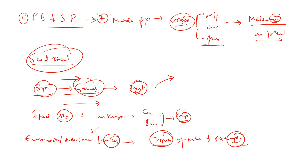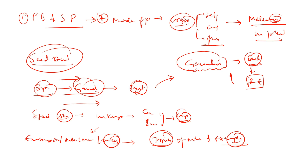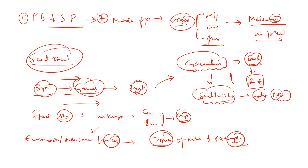Next, cover the phases of germination — how germination occurs and what changes undergo in the seed while radical protrusion takes place. Along with germination, cover the seed imbibition process and the principle behind it. It is mainly due to water potential difference that seeds imbibe water from the environment. Go through all these mechanisms and understand the principle behind them.